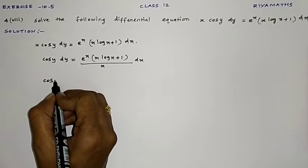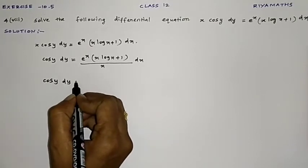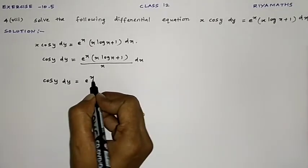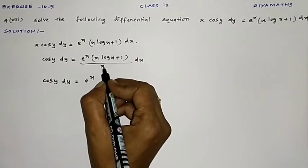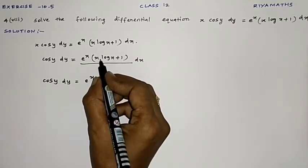This x comes here divided by: e^x (x log x + 1) / x dx. Now here there are two terms, taking x common from the first term.